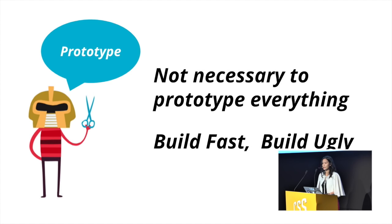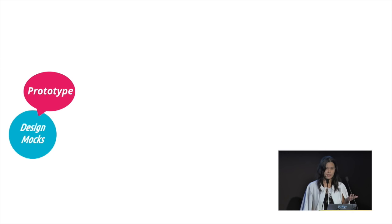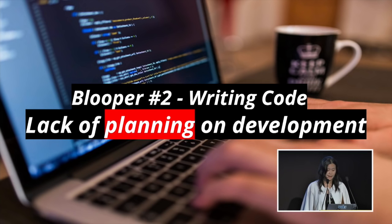In our new workflow, we prototype and assess design feasibility before the design mockup stage. When we reach the development stage, we notice far less time is lost compared to before — because we already know about problems beforehand. We're not surprised by them anymore and we know how to solve them. Once we roll out for beta testing, if there are feature requests we can still squeeze in, we do it before the final rollout.